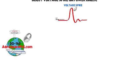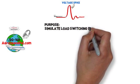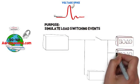The purpose of this test is to simulate other EUT's load switching that may cause a voltage spike on a shared power line.